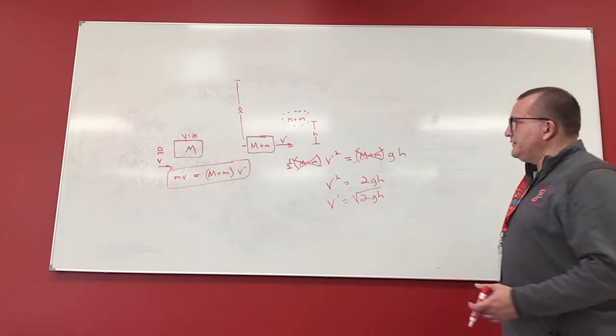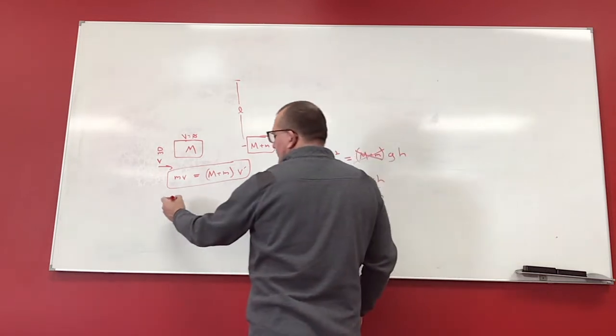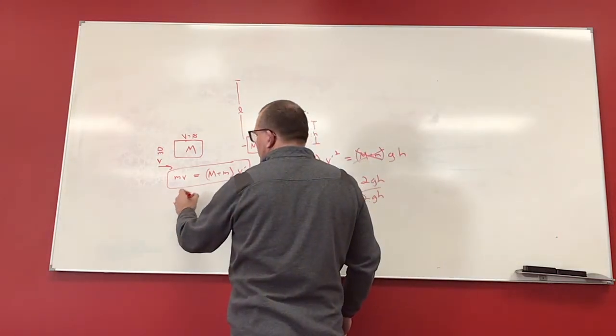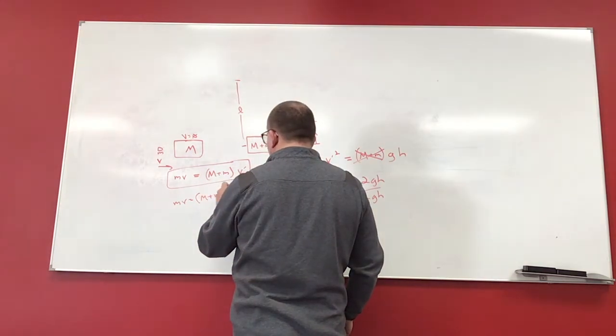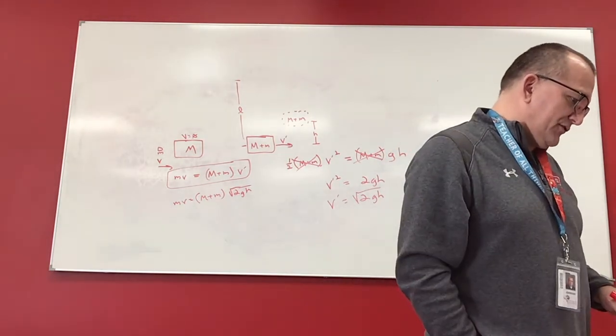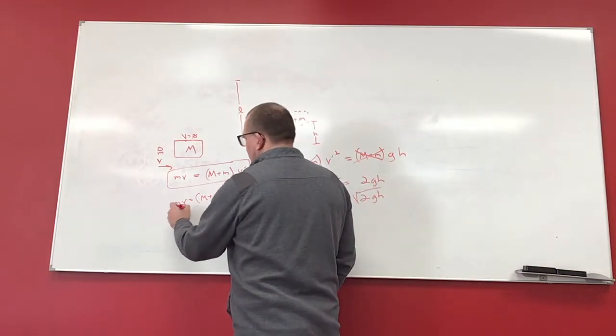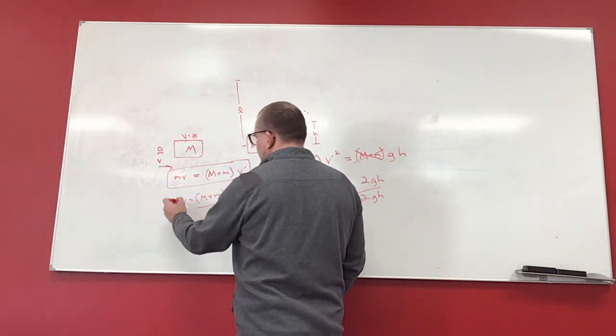And then I'll just take this and put it in here for V prime. So I have mV is equal to (m + M) square root of 2GH. And then if I just want to solve this in terms of V, I just divide both sides by m.